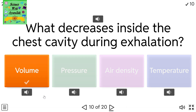What happens to air pressure during exhalation? A) Increases. B) Decreases. C) Stays the same. D) Fluctuates.